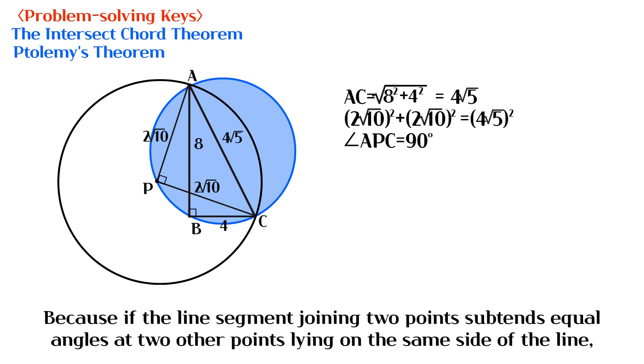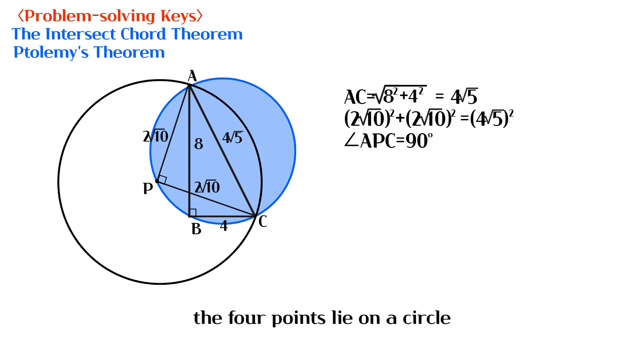Because if the line segment joining 2 points subtends equal angles at 2 other points lying on the same side of the line, the 4 points lie on a circle.